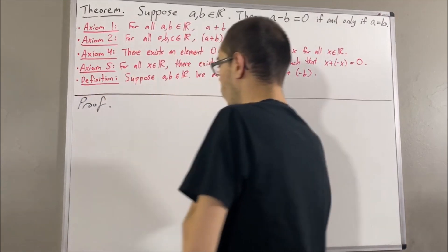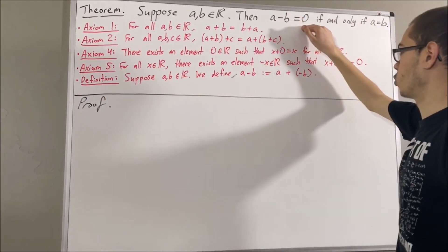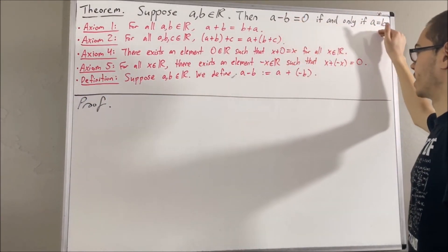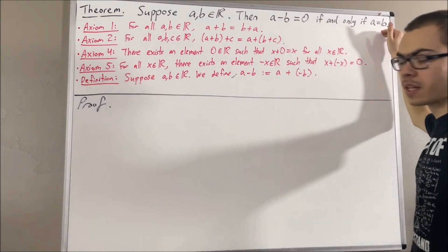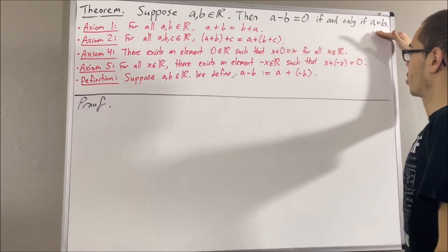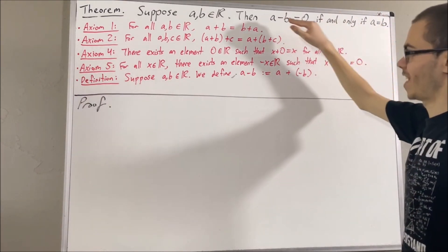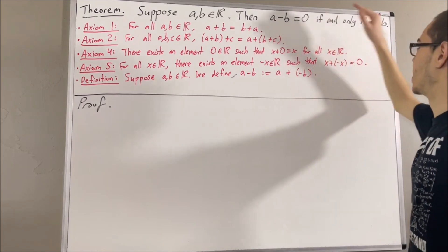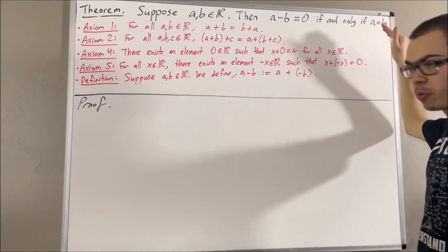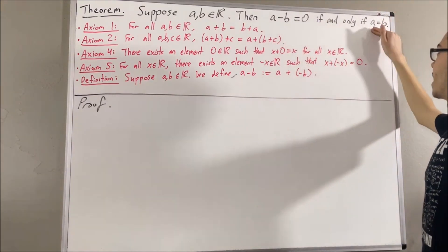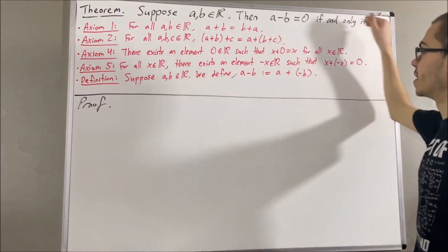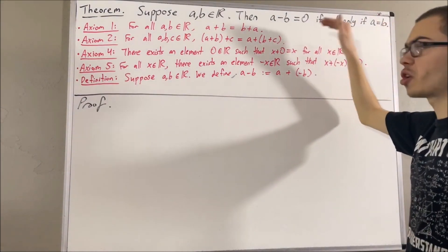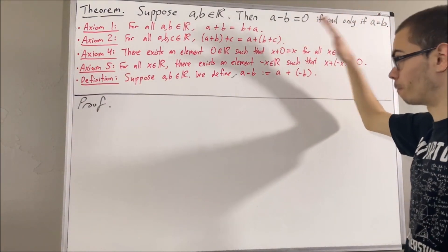We're trying to prove a minus b equals zero, if and only if a is equal to b. To prove that, we're going to prove if a minus b is equal to zero, then a is equal to b. And then we're going to prove if a equals b, then a minus b is equal to zero.